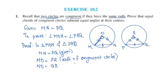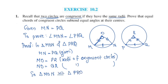These are radii of congruent circles. Therefore, triangle MON is congruent to triangle PRQ by the SSS congruence rule. The corresponding angles are congruent.